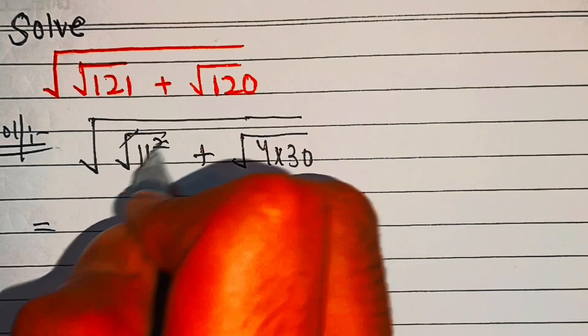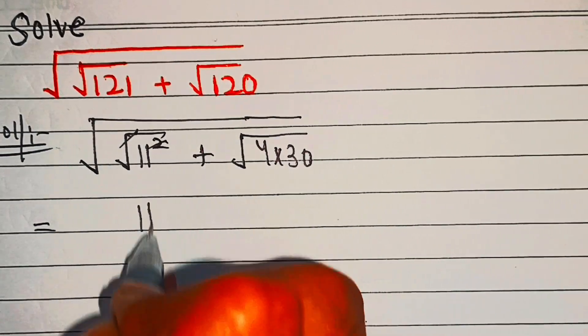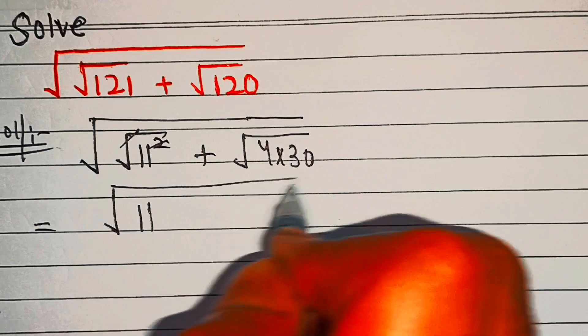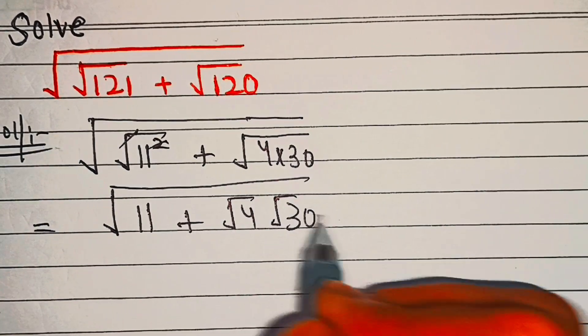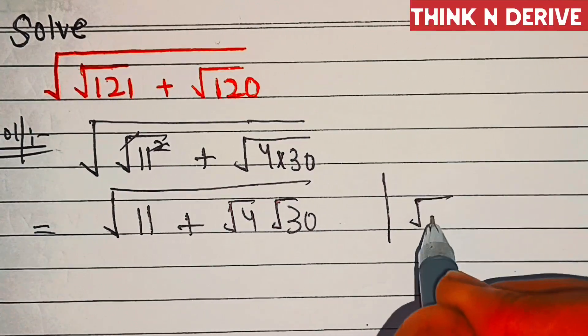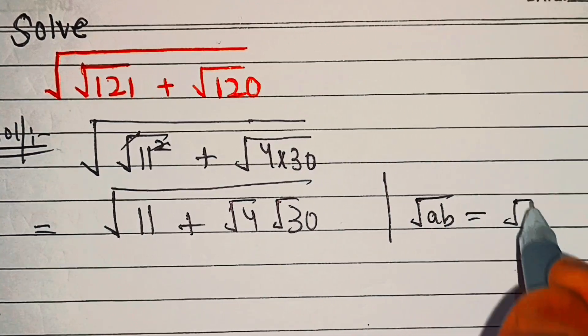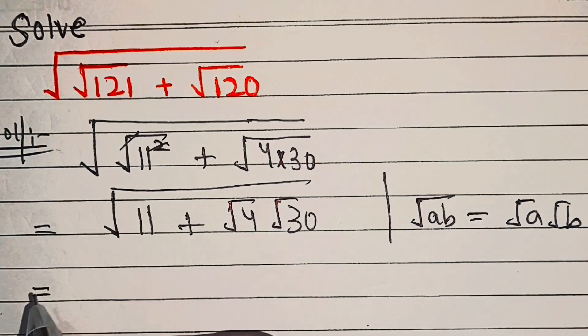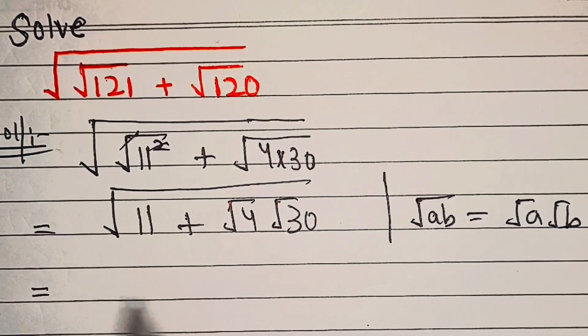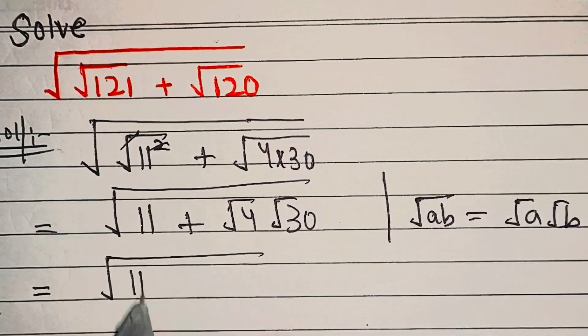square root 11 squared plus under root 4 into under root 30. Because root of AB equals root of A into root of B, this equals 11...